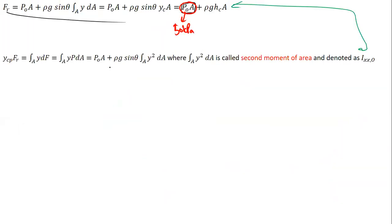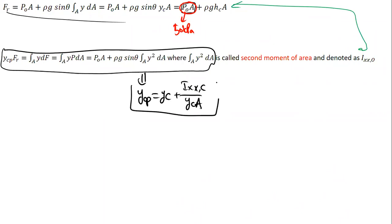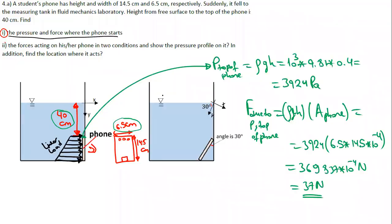We'll use this formula but in a more simplified way, which says that ycp equals yc plus Ixxc divided by (yc times area). That is the simplified form. If you look at our lectures you can see how we derived this formula.